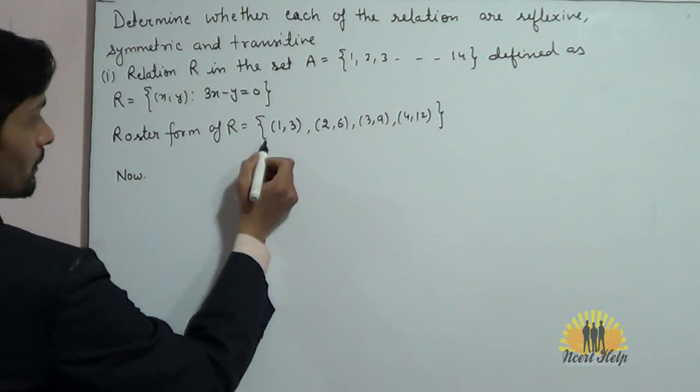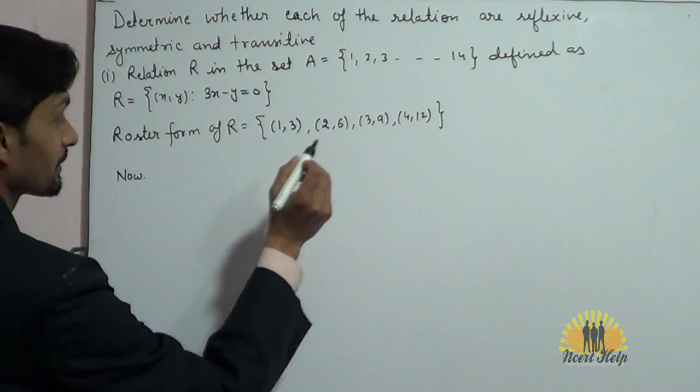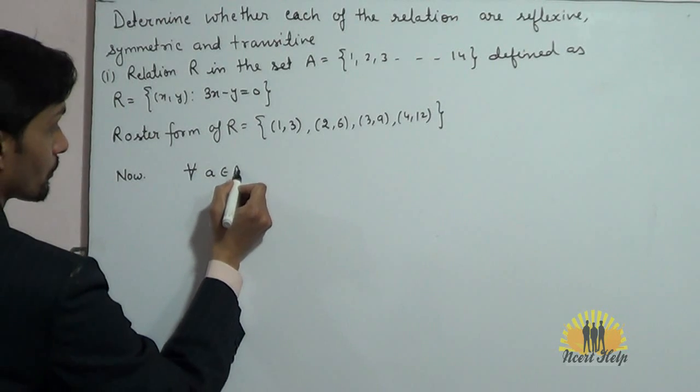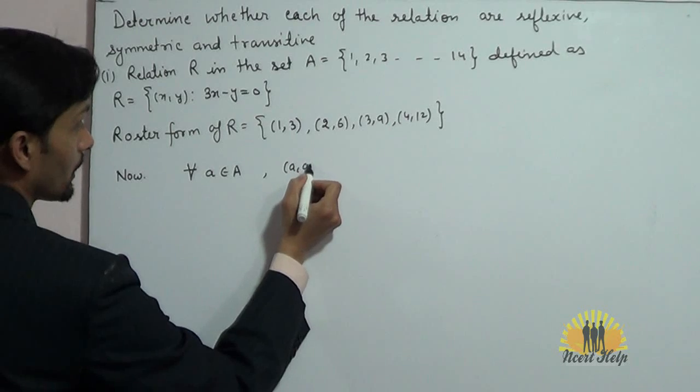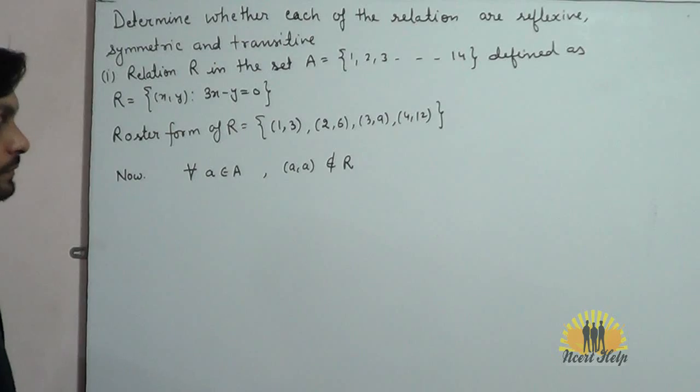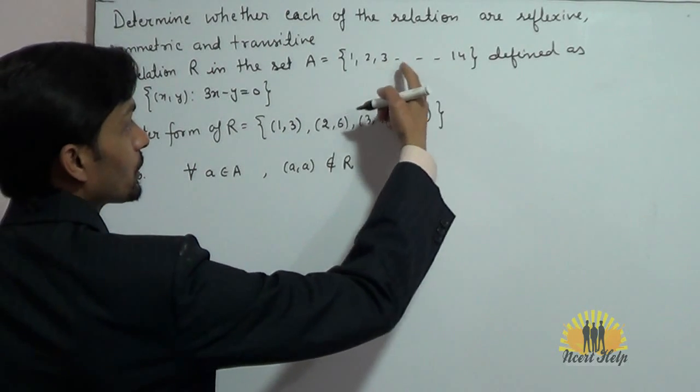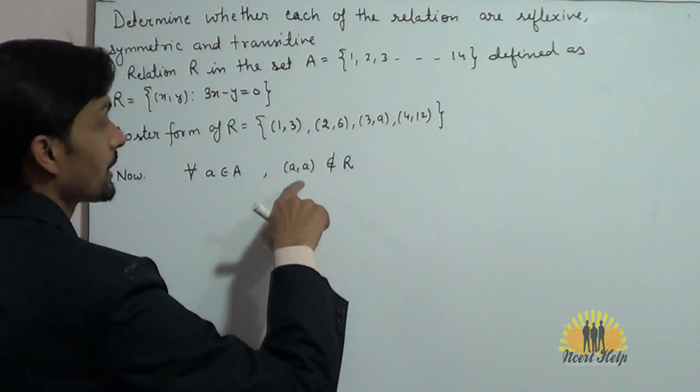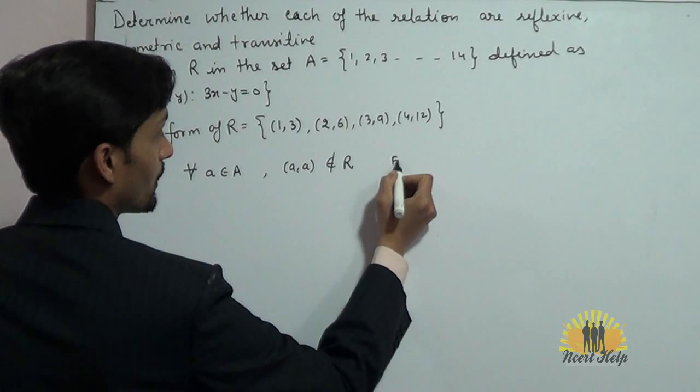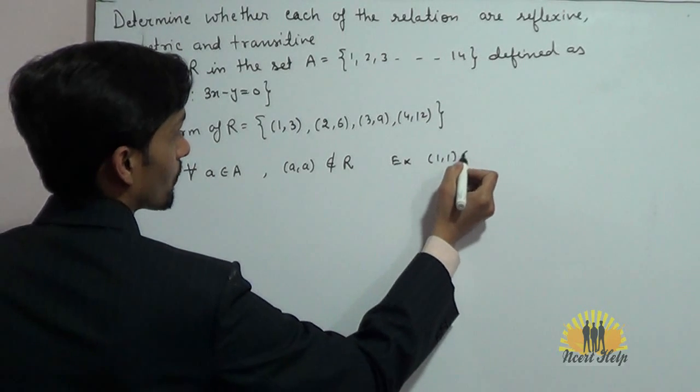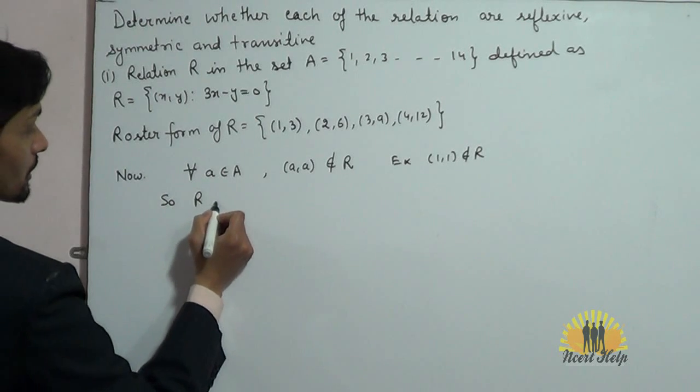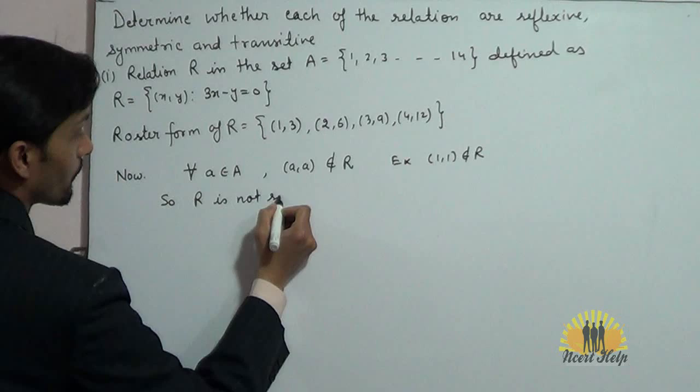Now, from the roster form, it can be easily observed that for all elements a belonging to A, (a, a) does not belong to R. Because in A we have 1, 2, 3 up to 14, and we don't have (1, 1), (2, 2), (3, 3) in the relation R. For example, (1, 1) does not belong to R. So the relation R is not reflexive.